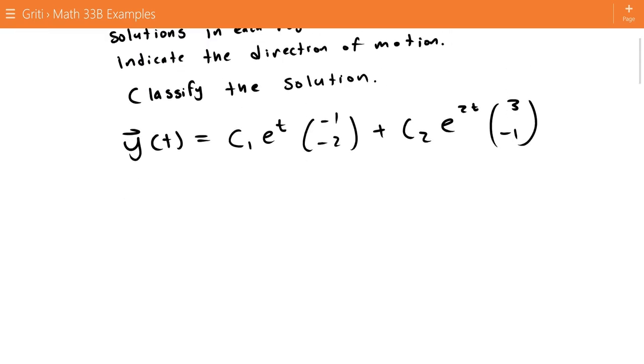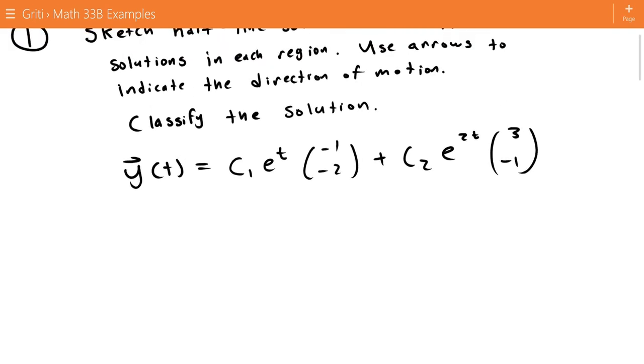And we're given the solution, y of t equals c1 e to the t times the vector negative 1 negative 2 plus c2 e to the 2t times the vector 3 negative 1.